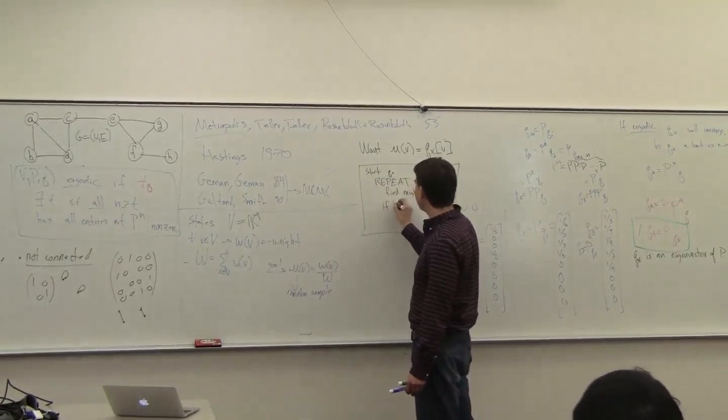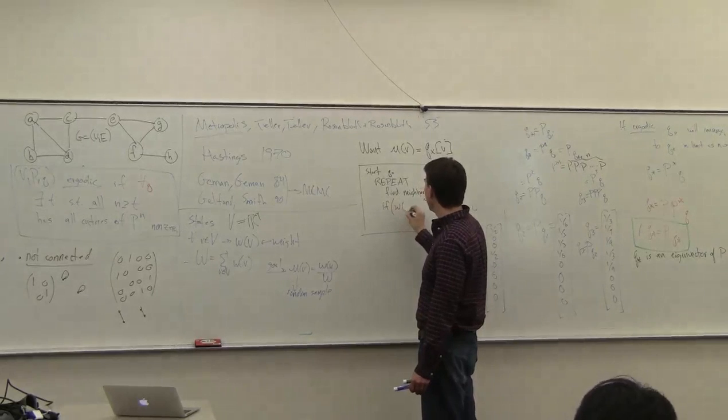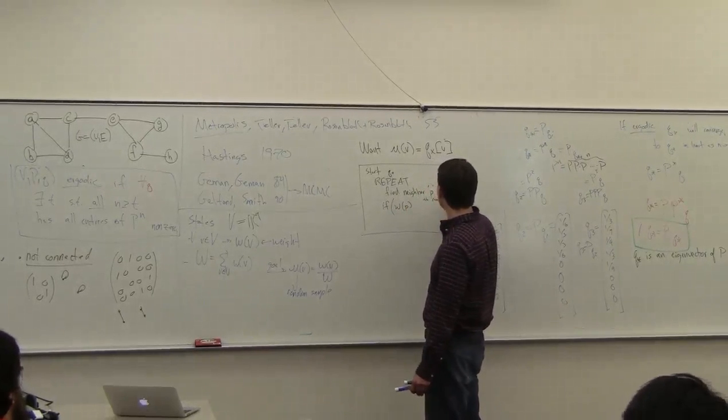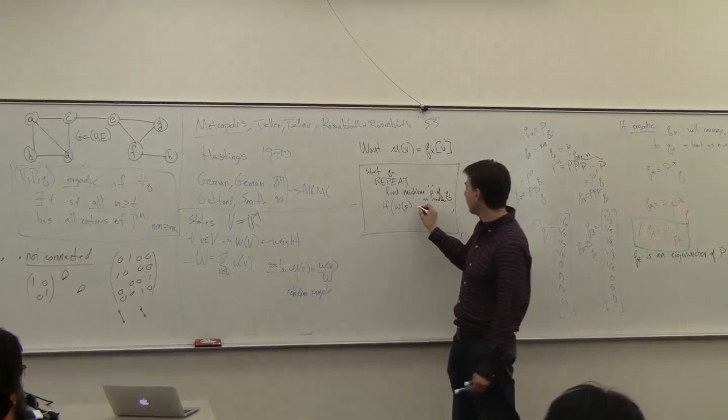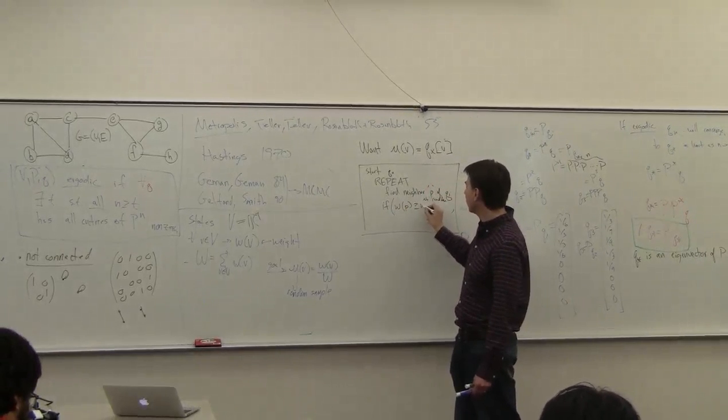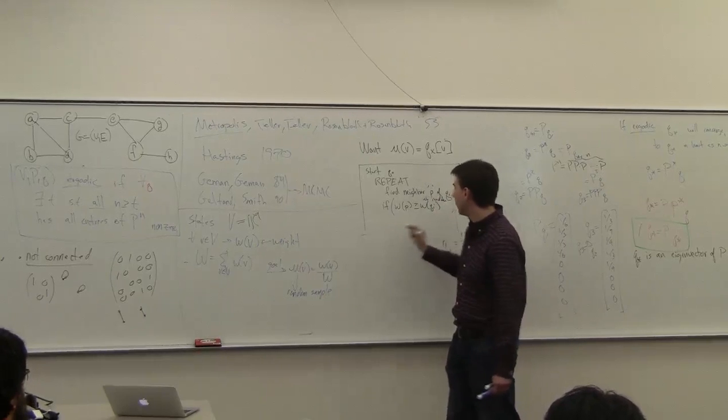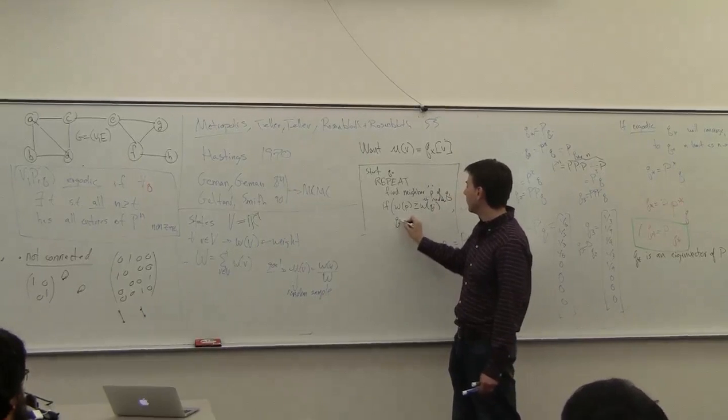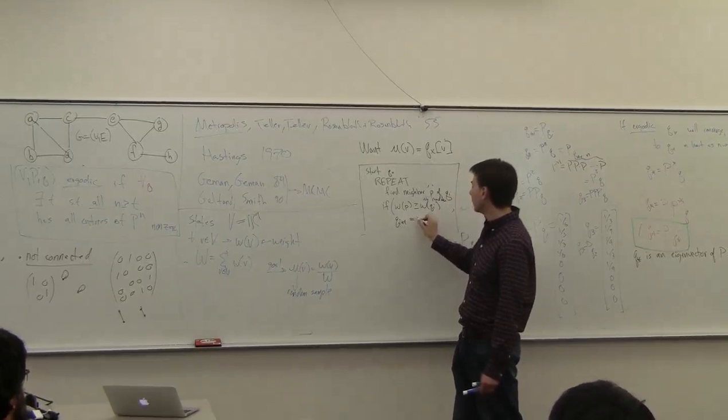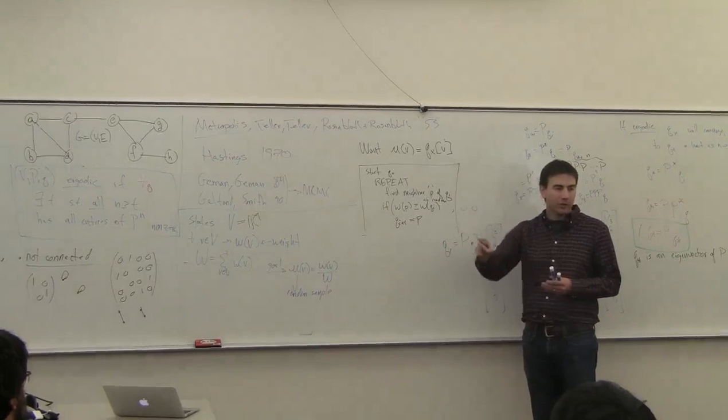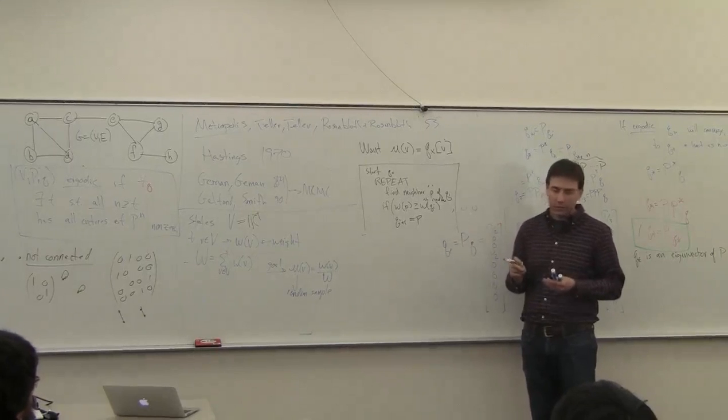So we do this, and then we say if the weight of P, let's call this Q_i, if the weight of P is greater than the weight of Q_i, then I'm going to set Q_{i+1} equal to P, right? So if I picked a neighbor and my neighbor's weight was larger, I always jump to it.